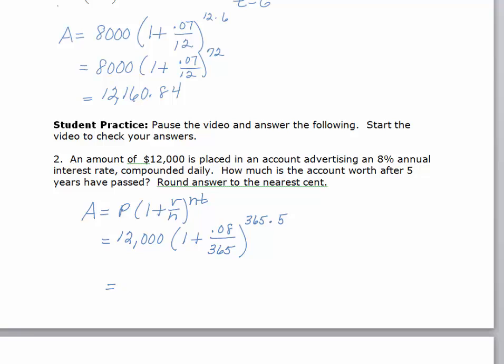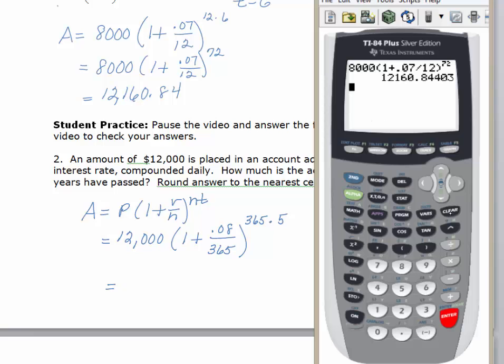And so let's pull out our calculator to evaluate this. Clear that out. And on this one, I'm actually not going to evaluate the exponent first. I'm going to show you how, if you don't want to do that, how you can do it on your calculator. But you have to be really careful with your exponents. So I'm going to type the 12,000 and open parentheses. 1 plus 0.08 divided by 365.